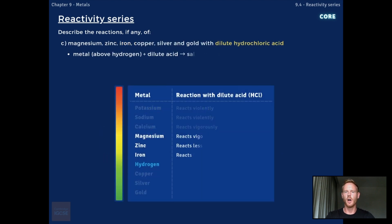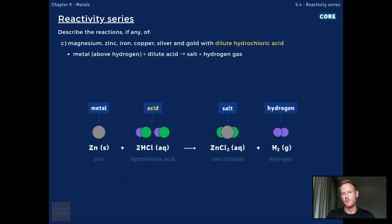Metals above hydrogen in the reactivity series react with dilute hydrochloric acid to produce a salt and hydrogen gas. For example, zinc reacts with hydrochloric acid to produce zinc chloride, which is a salt, and hydrogen gas. The reactions of metals with dilute acids occur with decreasing vigour moving down the series.